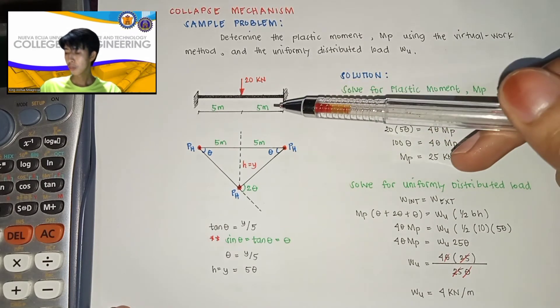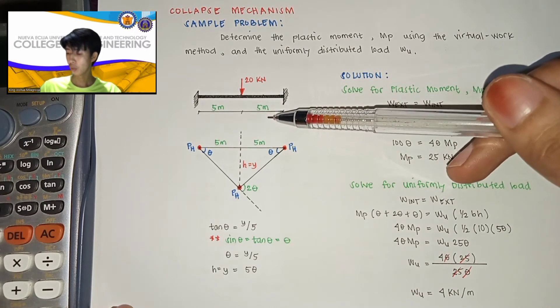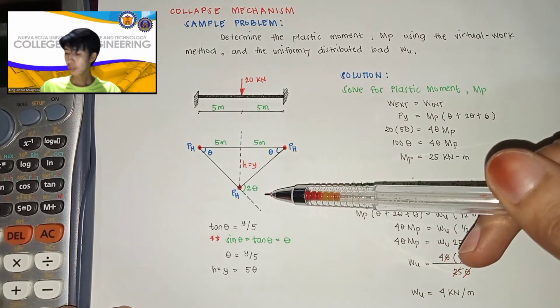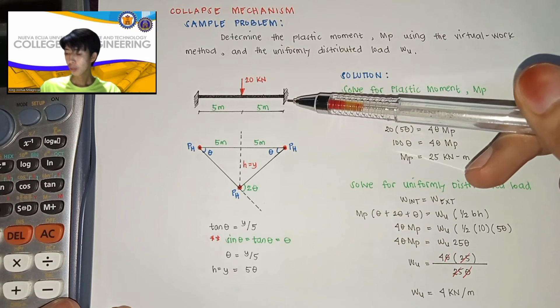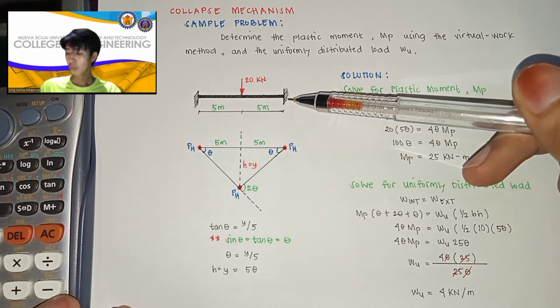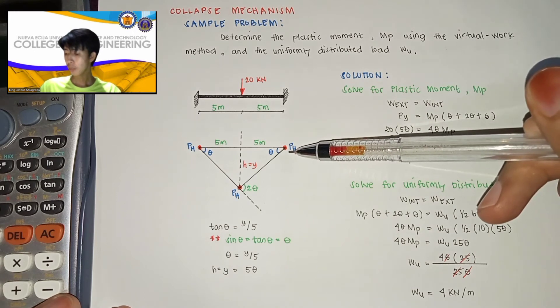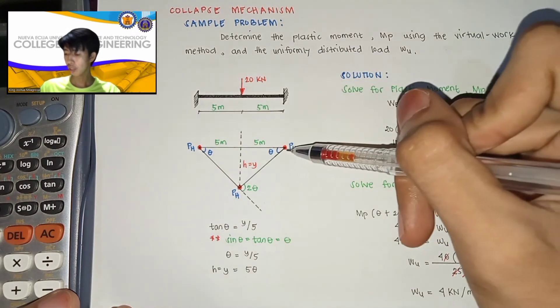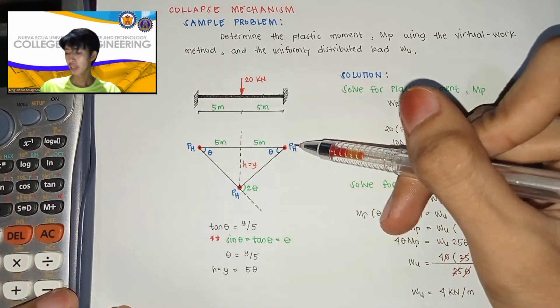Yung span ng beam natin is 10 meter. For the collapse mechanism, since yung beam natin is both fixed, yung magiging point nyan dito sa dulo-dulo ng beam is plastic hinge.